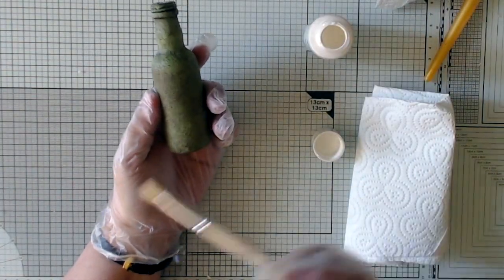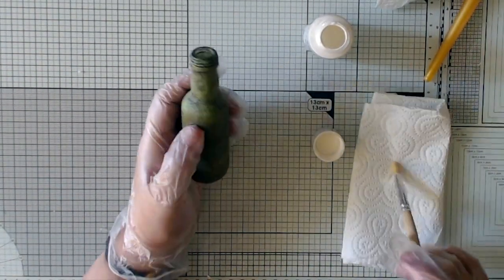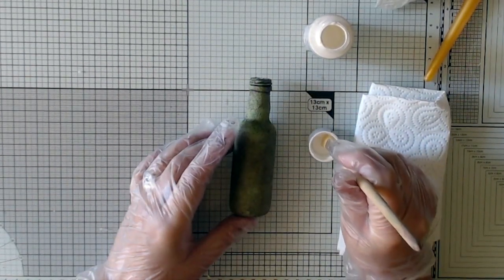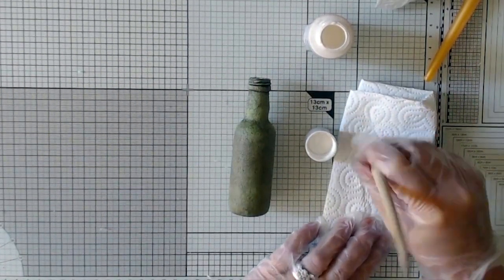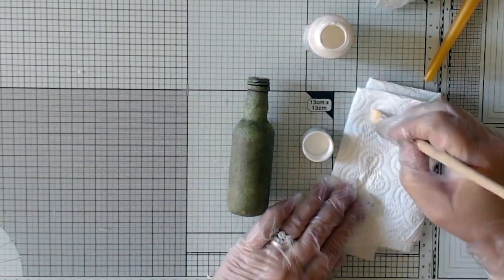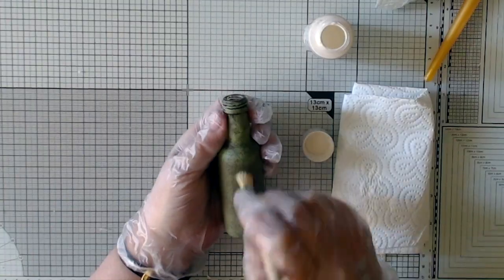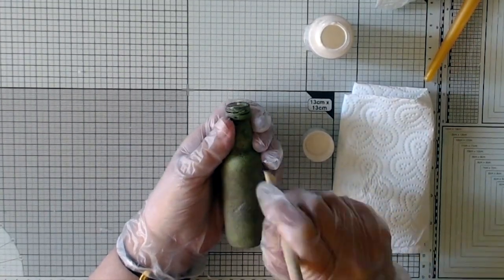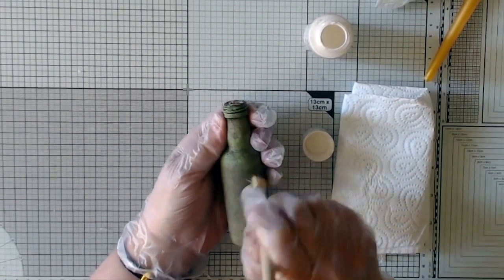Once it's dry, then I dry brush it all over to add some highlights. I have a brush with stiff bristles and some warm white paint. I load my brush with a small amount of paint and wipe most of it off, and then I brush all over the surface in every direction.